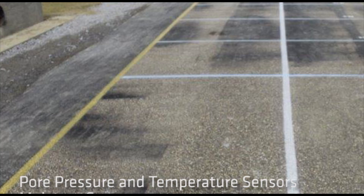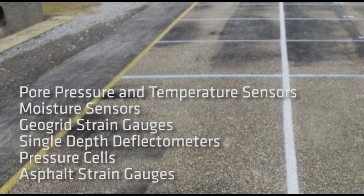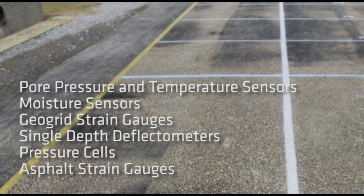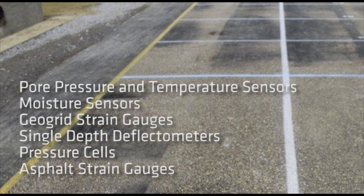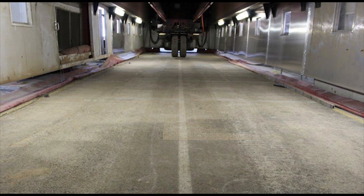Typical instrumentation utilized to monitor conditions and pavement performance includes pore pressure and temperature sensors, moisture sensors, geogrid strain gauges, single depth deflectometers, pressure cells, and asphalt strain gauges. Upon completion of the instrumented test section, the traffic simulator is positioned and the final assembly is performed. This includes placement of the sidewalls and climate control equipment.